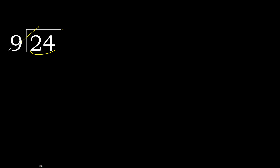9 multiplied by 3 is 27, which is greater. So multiplied by 2: 18 is not greater, ok. 24 minus 18 is 6.